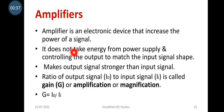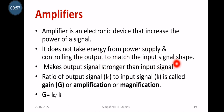First and foremost, let us understand the purpose of amplifiers. An amplifier is an electronic device that increases the power of a signal. It takes energy from a power supply and controls the output to match the input signal in terms of shape. It makes the output signal stronger than the input signal. The input signal comes from a sensor or transducer but does not have sufficient strength, so we use an amplifier to provide that strength. An important term here is gain.